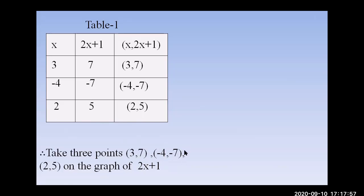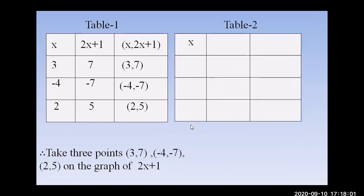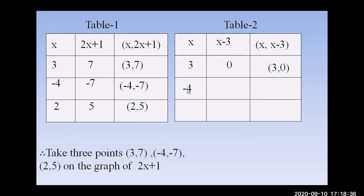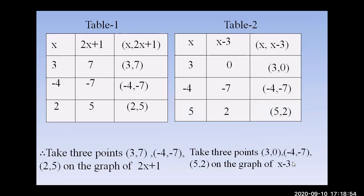Table 2: x and x − 3. If x = 3, then 3 − 3 = 0, giving point (3, 0). If x = −4, then −4 − 3 = −7, giving point (−4, −7). If x = 5, then 5 − 3 = 2, giving point (5, 2). These three points will be plotted for the graph of x − 3 on the same graph paper.